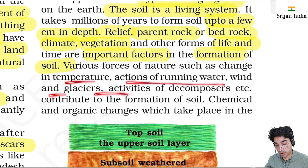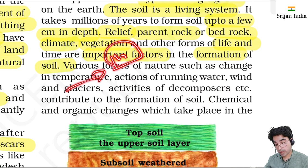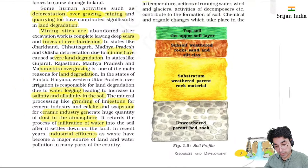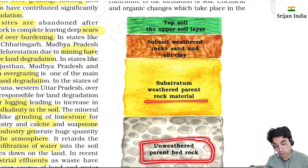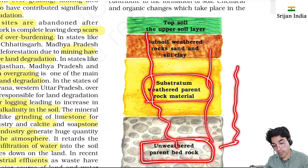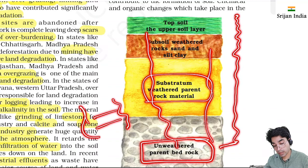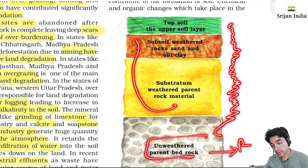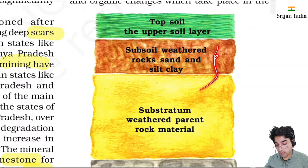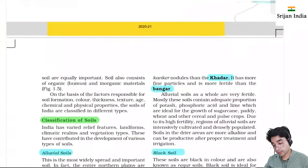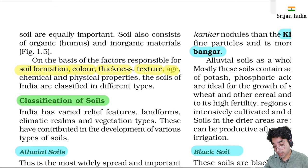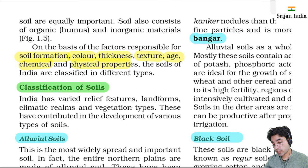Chemical and organic changes take place in soil creating profiles - layers. The lowest is the parent bedrock, then a substratum develops gradually with the soil's character developing above it. Subsoil has weathered rock, sands, silt, and clay; the top soil is the upper layer. Soil has organic humus as well as inorganic material. Based on factors of formation - color, thickness, texture, age, chemical and physical properties - soil is classified into many types. India has varied relief features, climate, and vegetation so different types of soil exist.